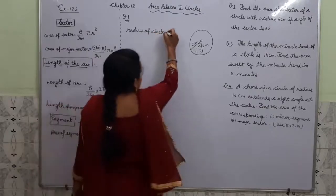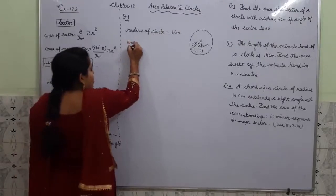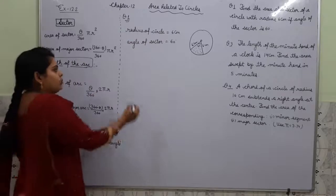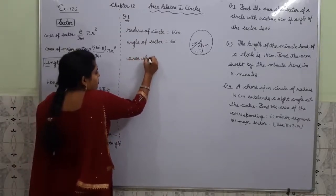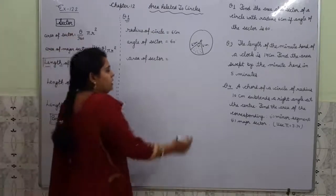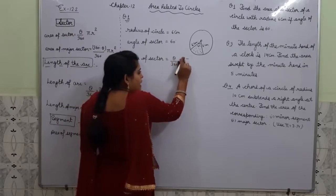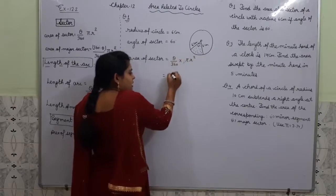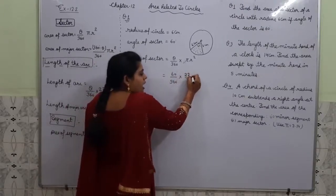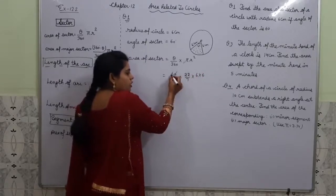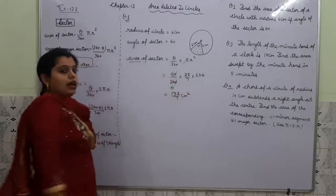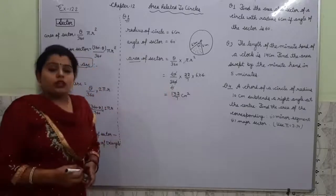Area of sector = θ/360 × πr². Theta is 60 degrees, so it equals 60/360 × 22/7 × 6 × 6. On solving, we get 132/7 centimetre square. Since it is area, we measure in square units. This is our answer to question number 1. Question number 2, you have to try yourself — a circle is given, find the area of the sector; first calculate its radius, then apply the same formula.